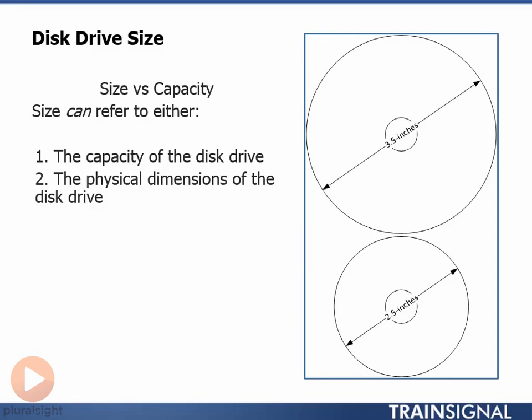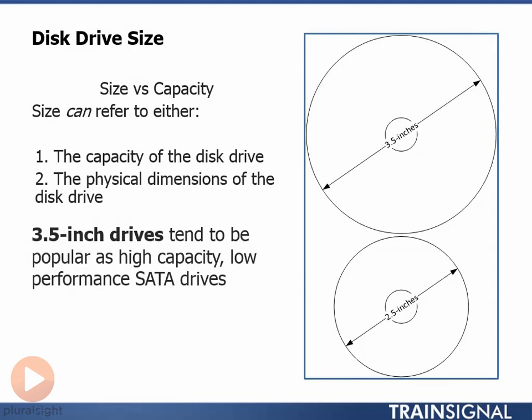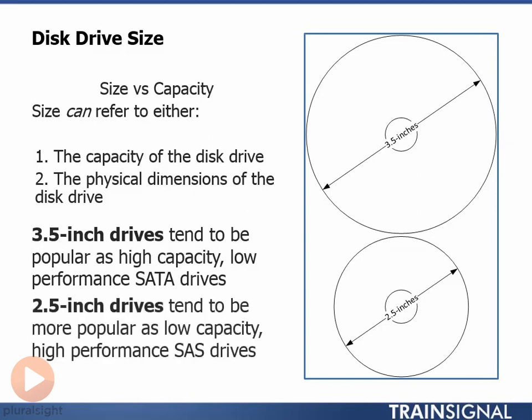However, 3.5 inch drives tend to be more popular as the lower performance but ultra high capacity drives, and usually ship with a SATA interface. Whereas 2.5 inch drives tend to be more popular as high performance but lower capacity drives, and tend to ship with a SAS interface. But these are just general rules of thumb and not strict rules.